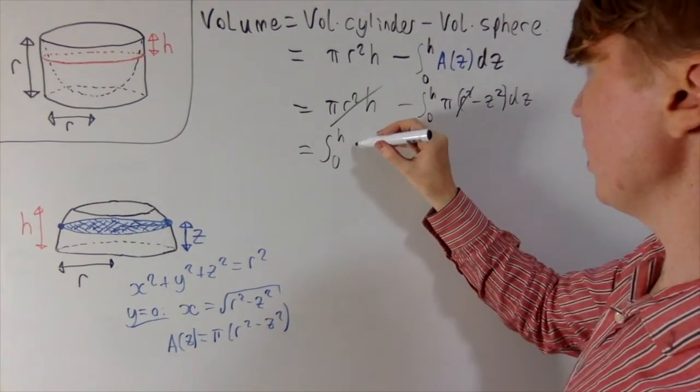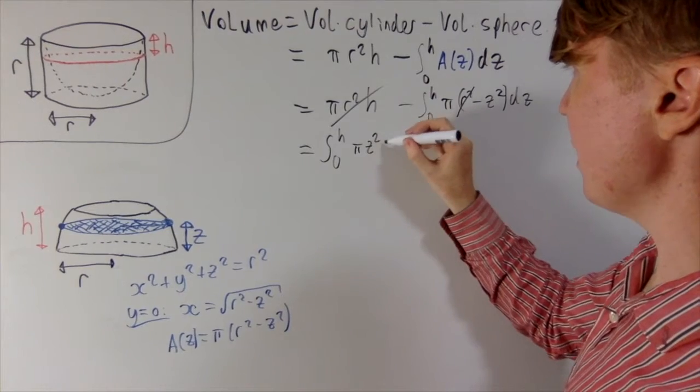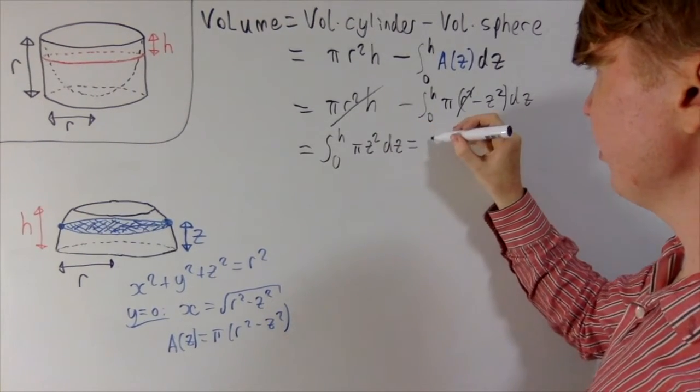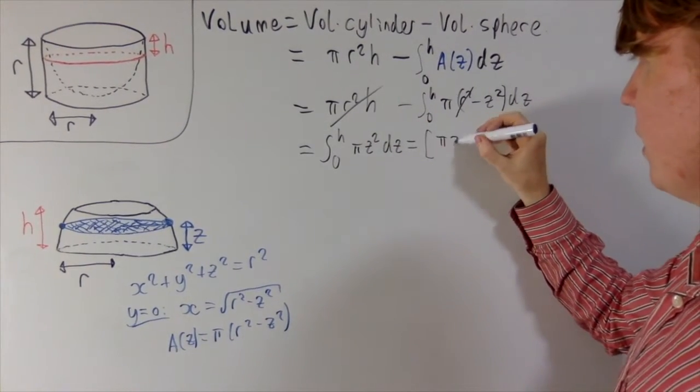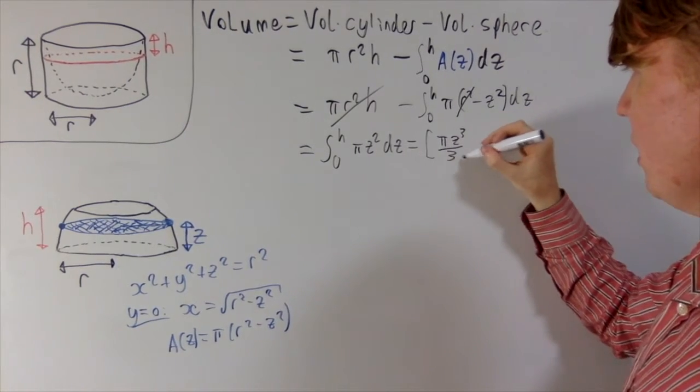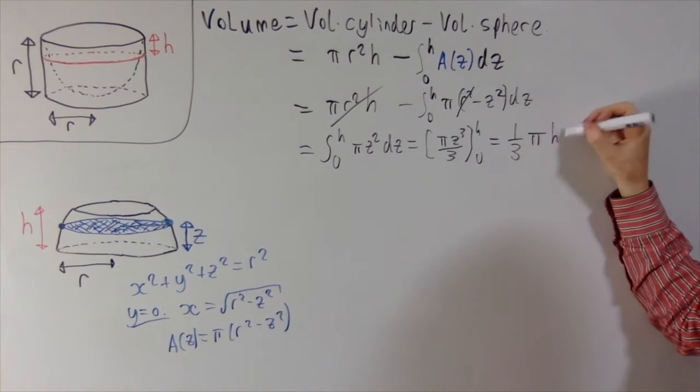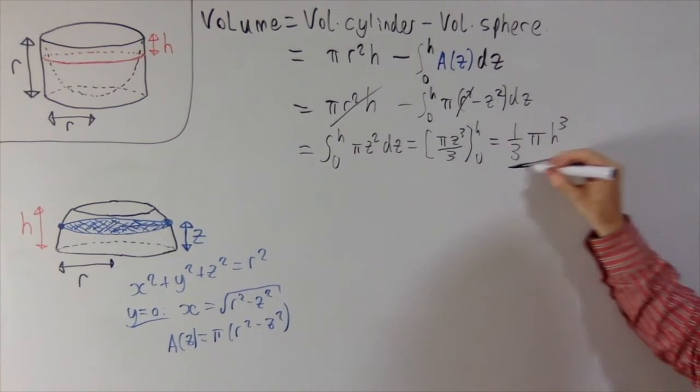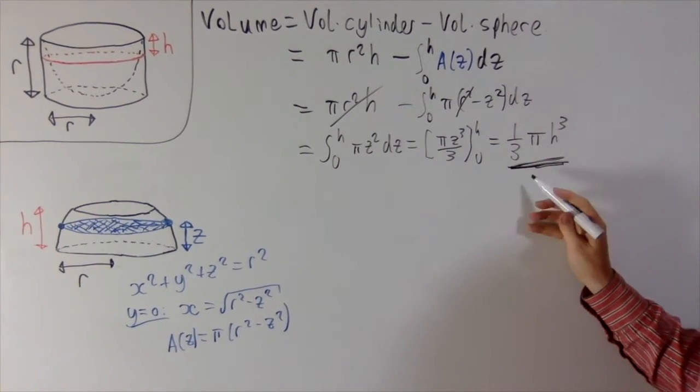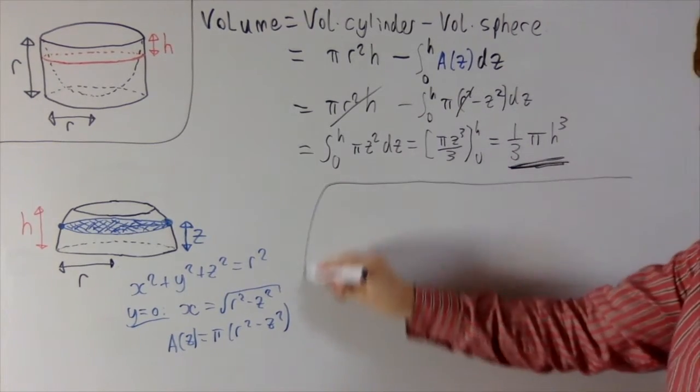So this gives us pi Z cubed over three, between H and naught, which gives us a third pi H cubed as our volume, which is exactly the same as what we had for the cone.